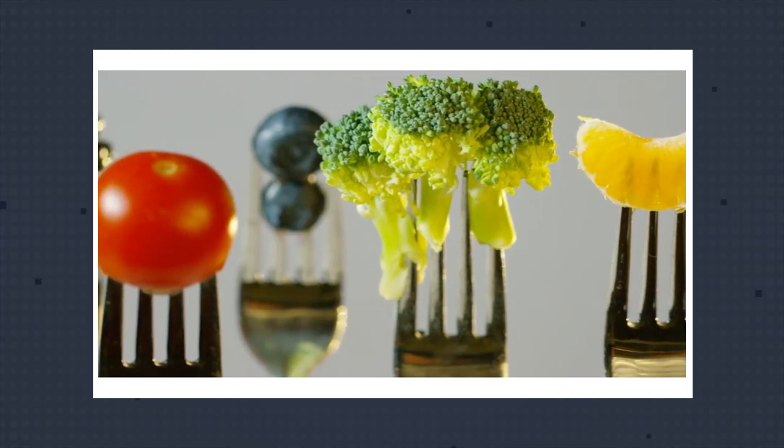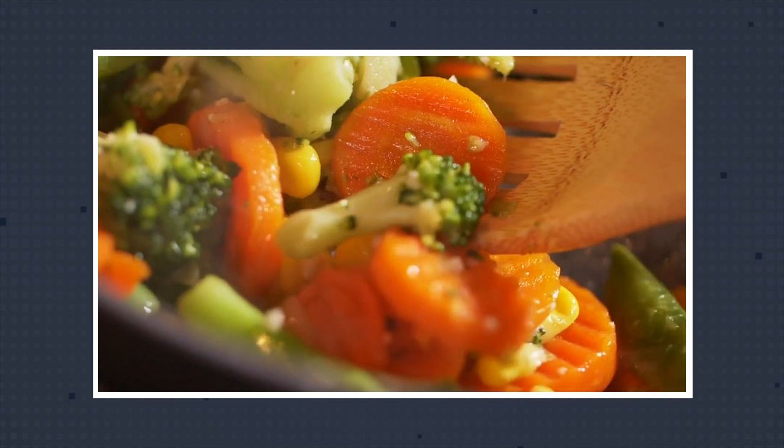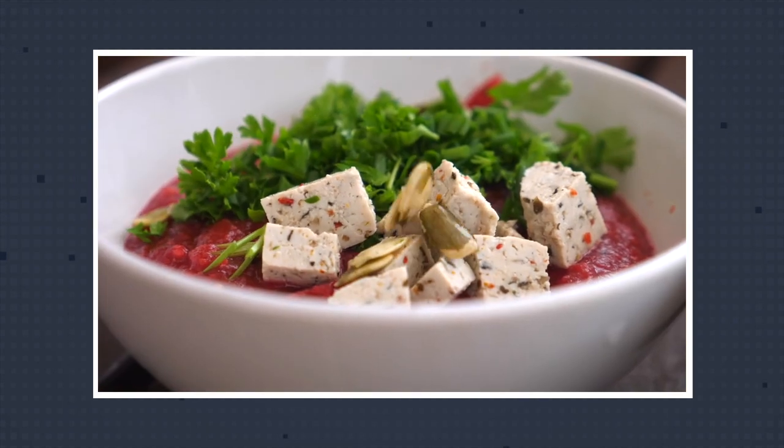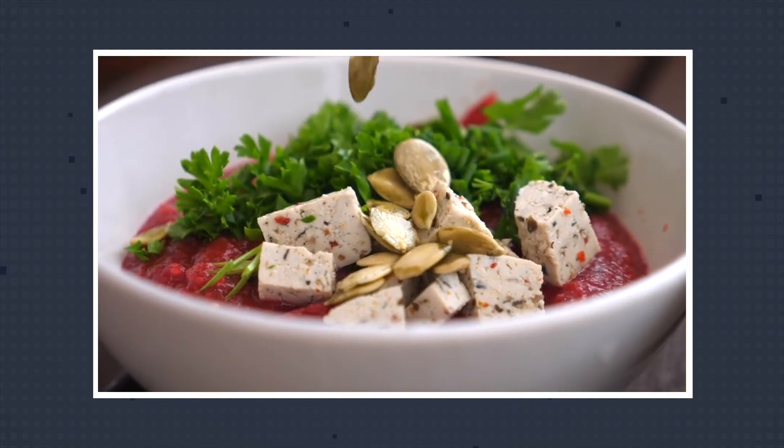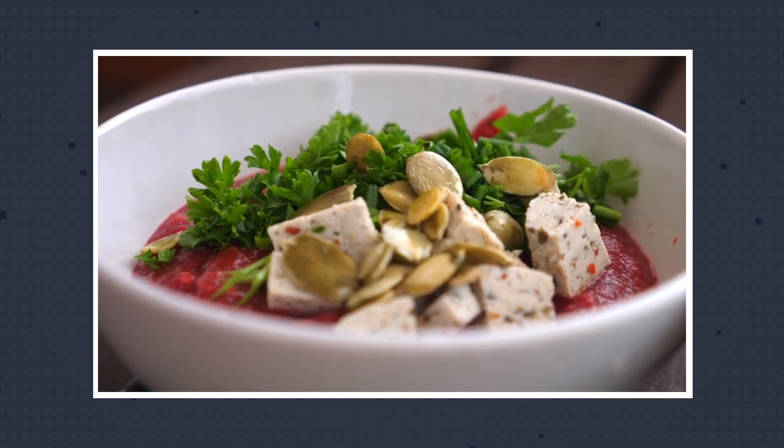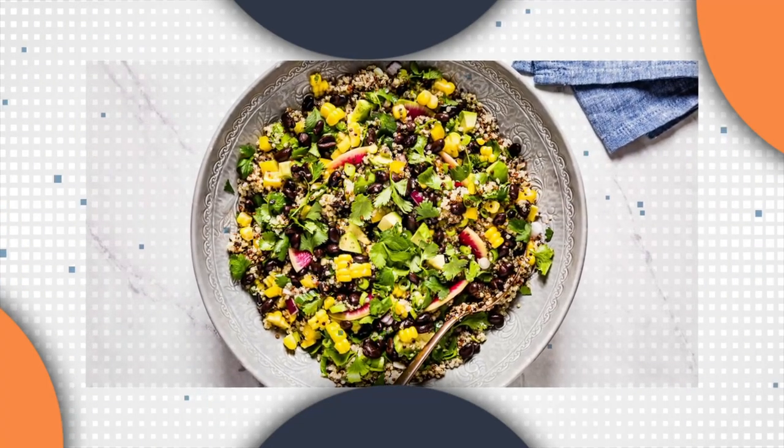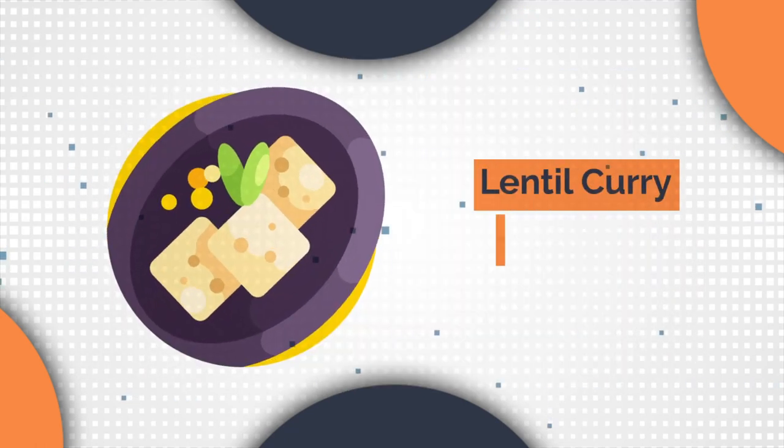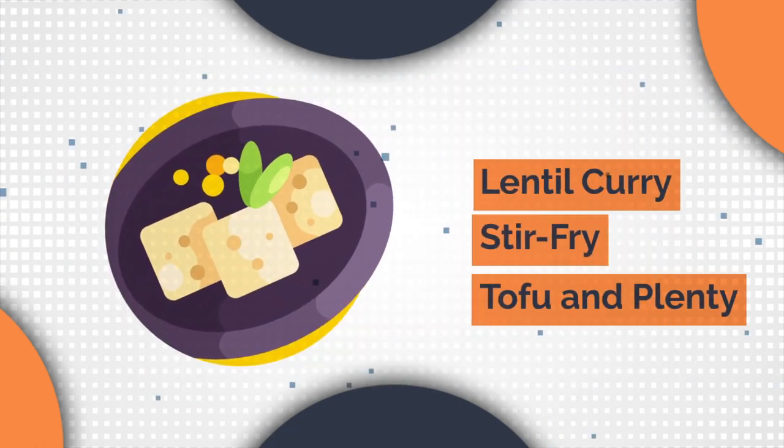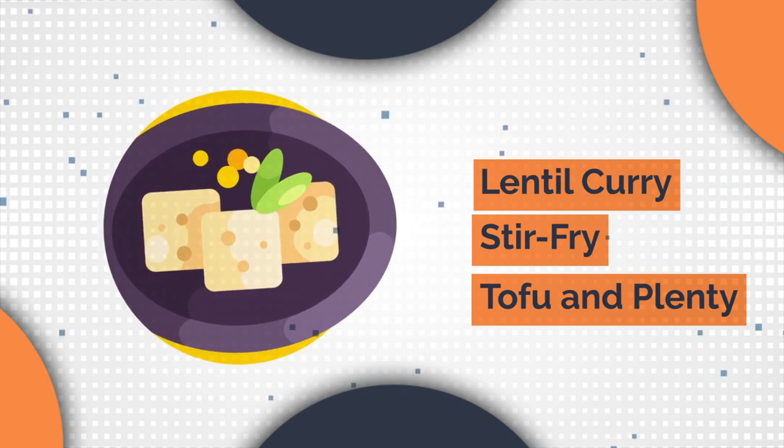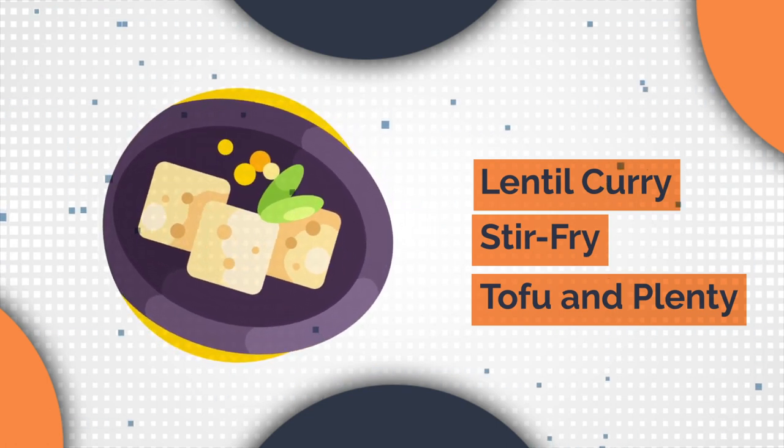With so many plant-based protein options available, the possibilities for meal planning are endless. Try a tofu scramble with veggies or overnight oats made with chia seeds and topped with nuts for breakfast. For lunch, a quinoa and black bean salad or a tempeh sandwich are great options. And for dinner, a lentil curry or a stir-fry made with tofu and plenty of veggies can provide a satisfying and protein-rich meal.